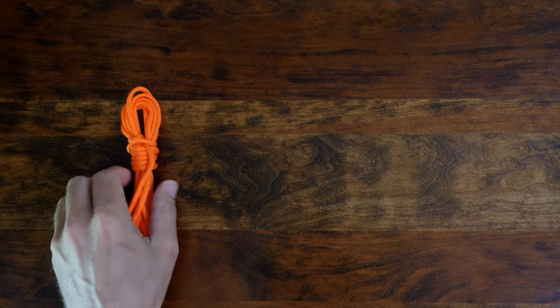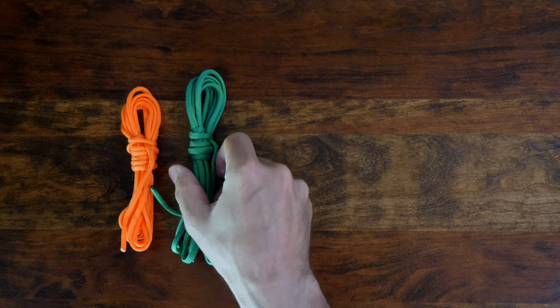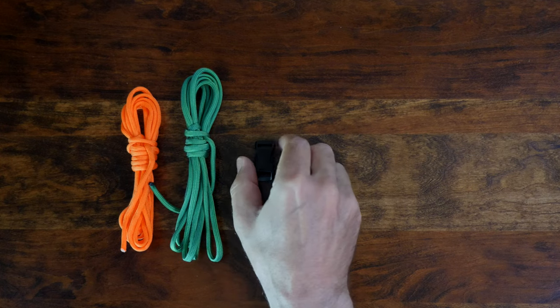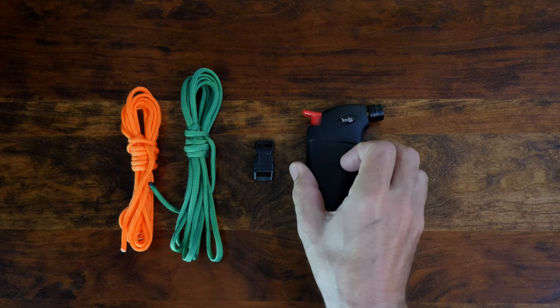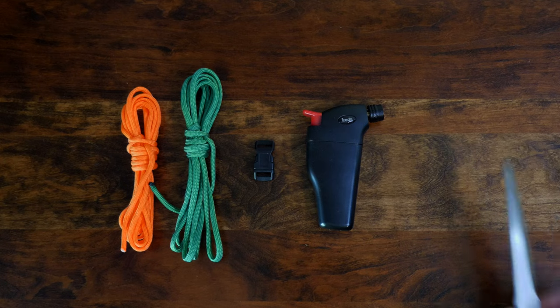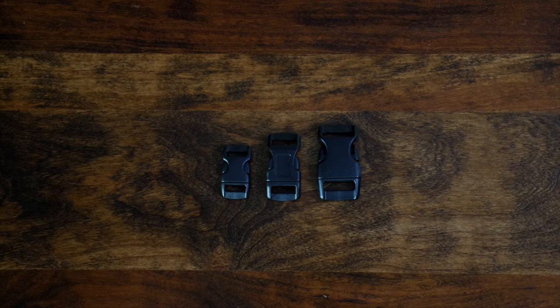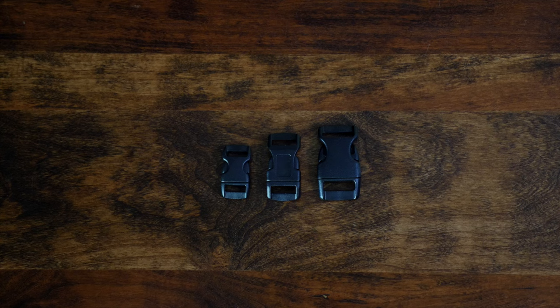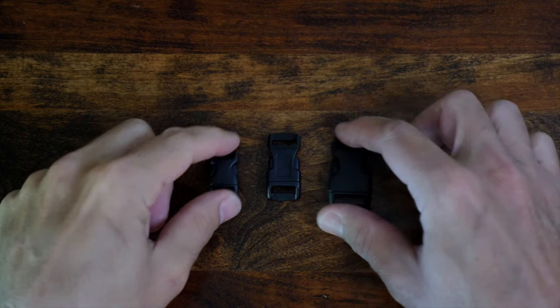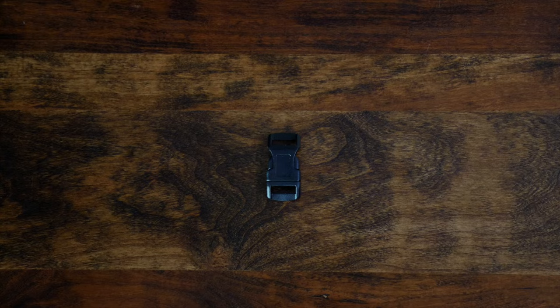To make this two-color paracord bracelet, you'll need two different colors of paracord, an appropriate clasp, a lighter, and a pair of scissors. I'm adding a link in the description of where you can find these supplies. There are a few different types and sizes of clasp, and really any will do, but I find a medium-sized paracord bracelet clasp to work best, and that's what I'll use for this project.